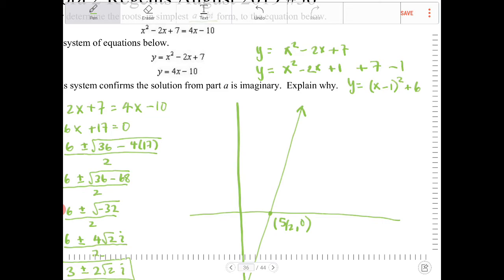So the equation then becomes y is equal to x minus 1 quantity squared plus 6. So the parabola is located at 1, 6, which is going to be right here. And the parabola has a y-intercept of 7. So this is 1, 6. It has a y-intercept of 7. So it looks something like this.